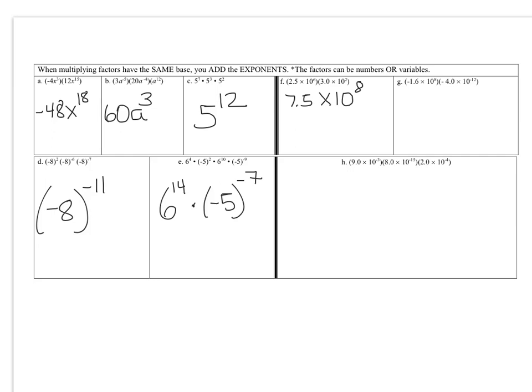Letter G: negative 1.6 times negative 4. Negative 1.6 times negative 4 is essentially 16 times 4, which is 64, but it's positive because a negative times a negative is positive. Since it's 1.6 times 4, it becomes 6.4. For the powers of 10, add exponents: 8 plus negative 12 is negative 4. So the answer is 6.4 times 10 to the negative 4th.